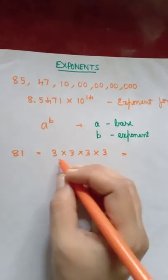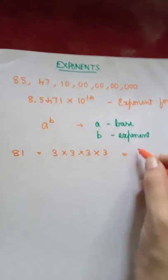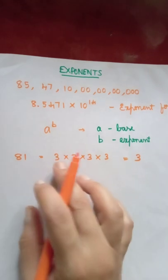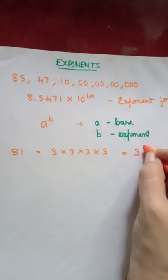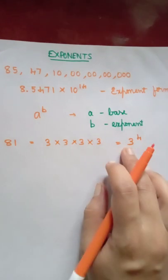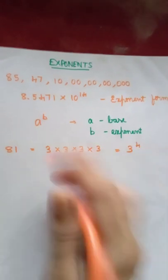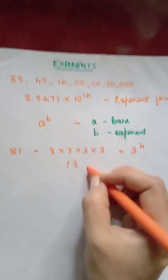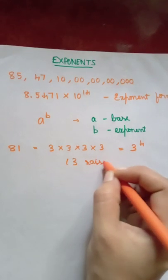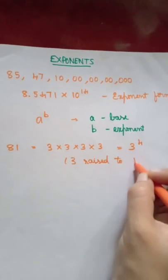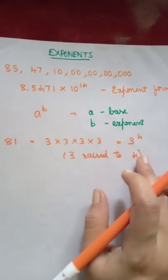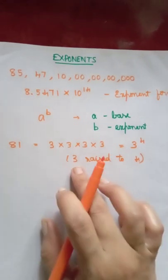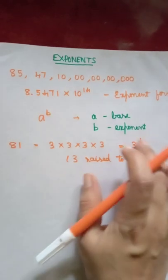You have the common term multiplied here is 3, and how many times you have multiplied the term? 1, 2, 3, 4. So 4 here, 3 raised to 4. This is said as 3 raised to 4. You read this as 3 raised to 4. Here 3 is the base and whatever you write on the top, that is exponent.